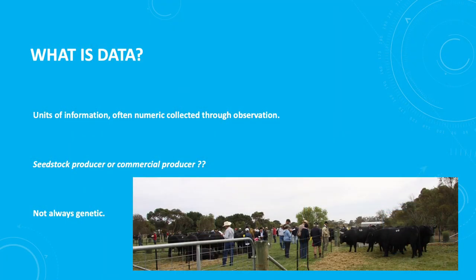I'll try and do what a lot of seedstock producers don't do — respect commercial producers and include you in the conversation as we go along. I think the main thing we need to understand is that intersection where data meets from the seedstock producer to the commercial producer, and a lot of the time that happens at a bull sale. So what is data? It's a unit of information, often numeric, collected through observation.